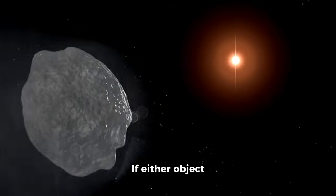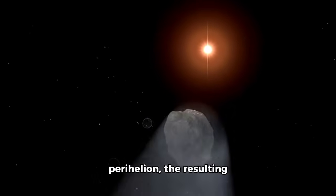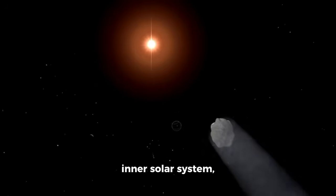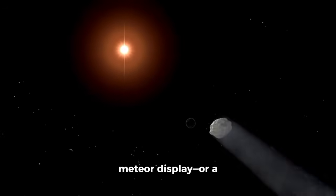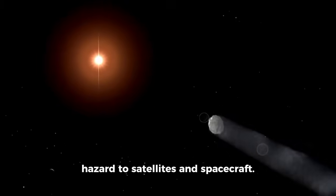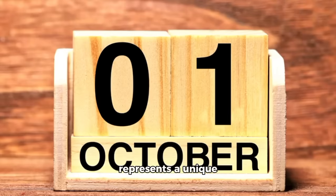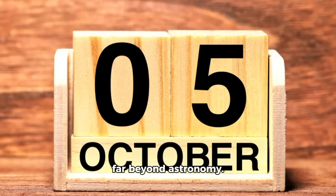If either object fragments near perihelion, the resulting debris could shower the inner solar system, creating a spectacular meteor display or a hazard to satellites and spacecraft. Whatever the outcome, the October window represents a unique alignment, and its implications may extend far beyond astronomy.